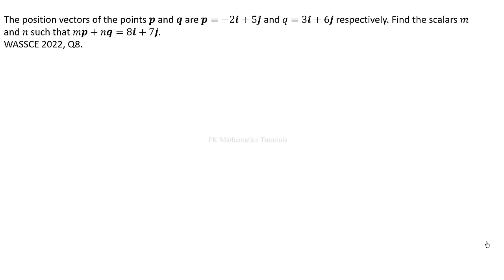To begin, this is question 8 of the elective mathematics paper on vectors. The position vectors of the points P and Q are P equal to negative 2i plus 5j, and Q equal to 3i plus 6j respectively. Find the scalars m and n such that m·P plus n·Q is equal to 8i plus 7j.